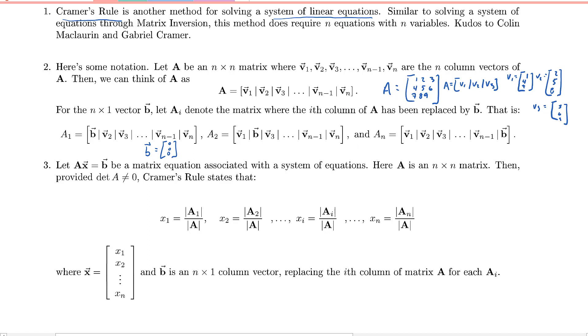So Ai in this case would be, sorry, let's make that A1. So A1 in this case would be 0, 0, 0, 2, 5, 8, and 3, 6, 9, where A2 would be 1, 4, 7, 0, 0, 0, 3, 6, 9.